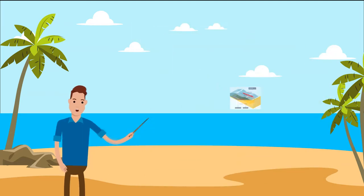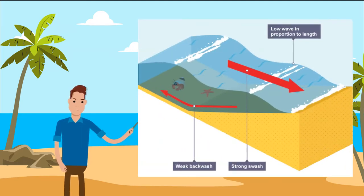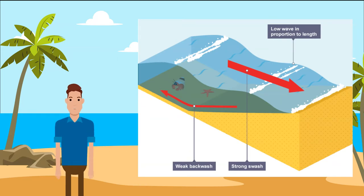Secondly, constructive waves. They are created in calm weather and are less powerful than destructive waves. They break on the shore and deposit material, building up beaches. They have a swash that is stronger than the backwash, a long wavelength, and are low in height.